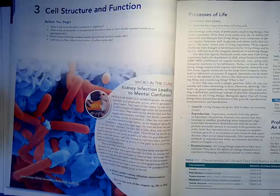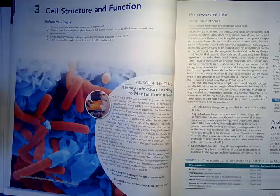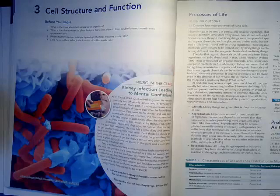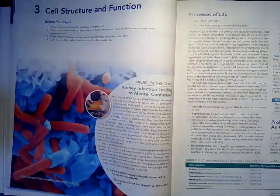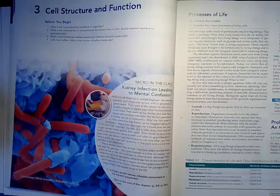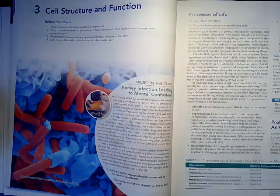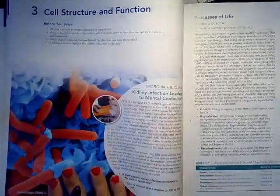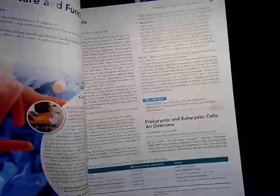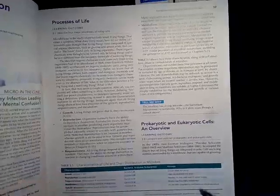Today we're going to be talking about Chapter 3, which is cell structure and function — primarily our bacterial cells. Remember, we have two different main types of cells: eukaryotic cells and prokaryotic cells. Let's start first with our processes of life that all living organisms have to maintain. I'm currently on page 59 of your textbook.